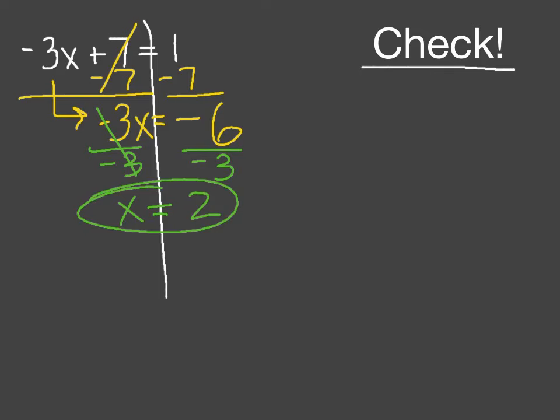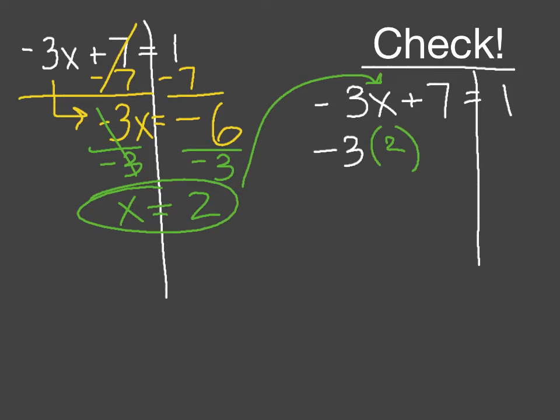But before I move on, I need to check my answer. I need to make sure that it makes sense. So I'm going to go back and start with the very original problem: negative 3x plus 7 equals 1. Still going to draw my line down my equal sign. But this time, I'm going to plug in the answer that I got into where the x is. So it's still negative 3, but now instead of the x, I'm going to replace it with the 2, the answer that I got when I was calculating. Plus 7 equals 1.